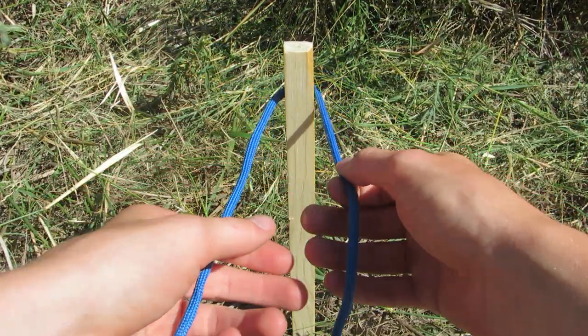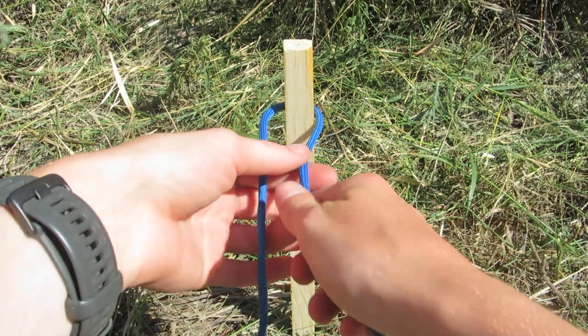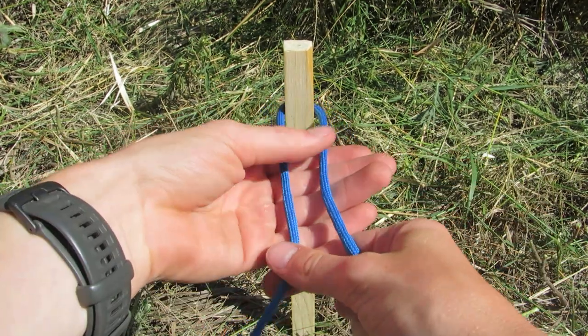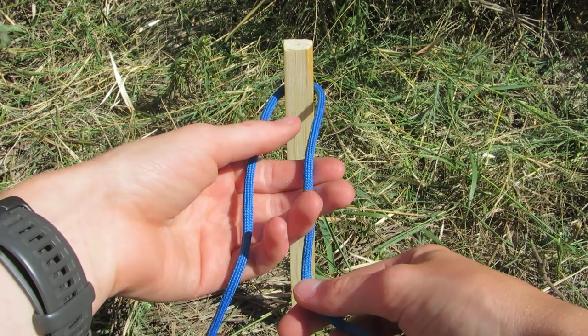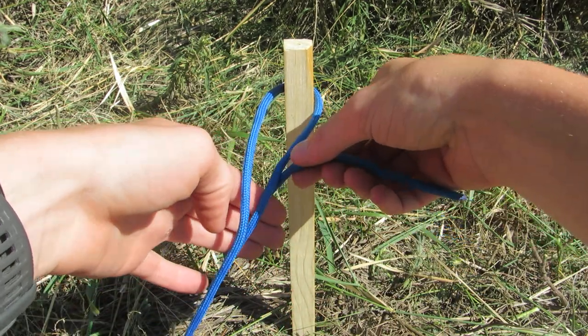First, wrap your rope around an object you want to anchor to, then reach your hand under and wrap your hand around like this.